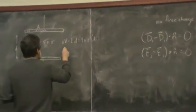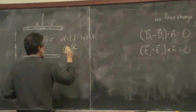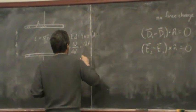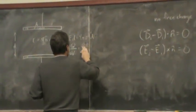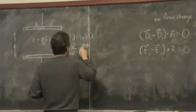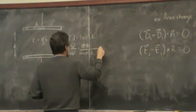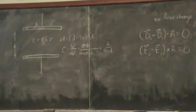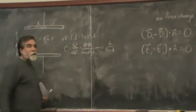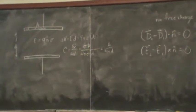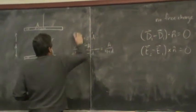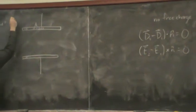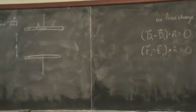So the potential difference between the two plates is E times D, so it's four pi sigma D potential difference. And then the capacitance is the charge stored on the plates divided by the voltage, the potential difference between the two sides of the plates. And so that's q, sigma A over four pi sigma D is equal to A over four pi D. In the absence of a dielectric, the capacitance is the area of the plates over four pi times the distance between the plates in CGS units.